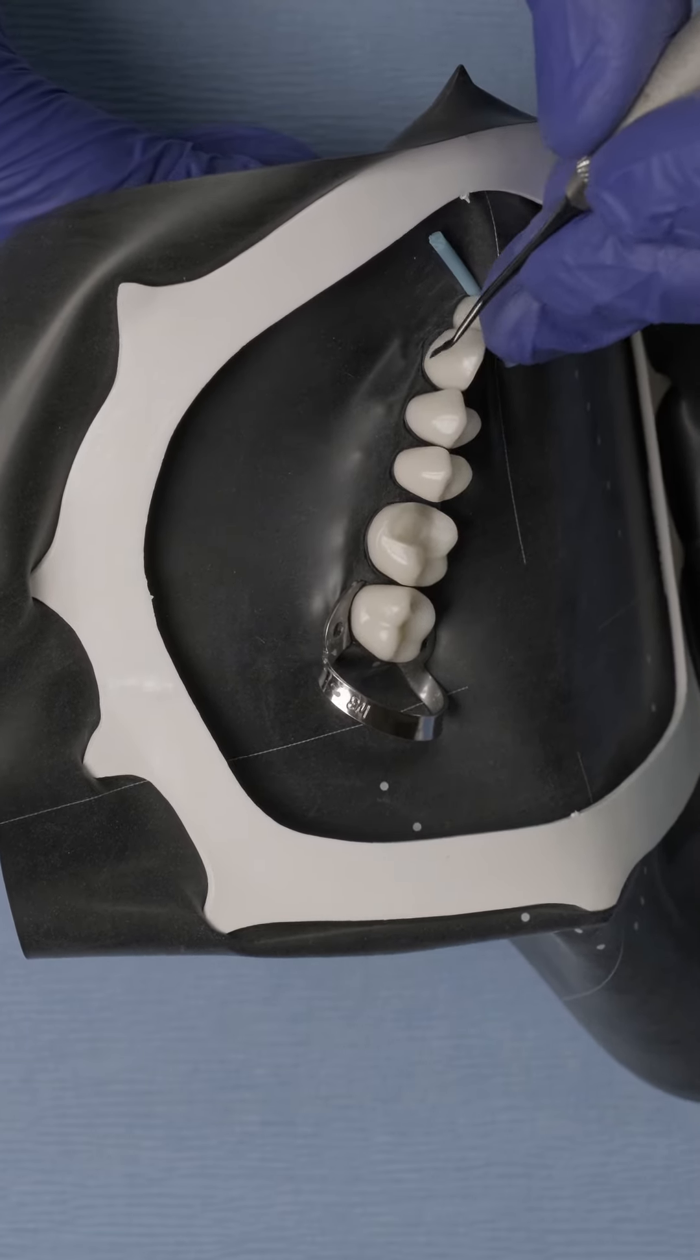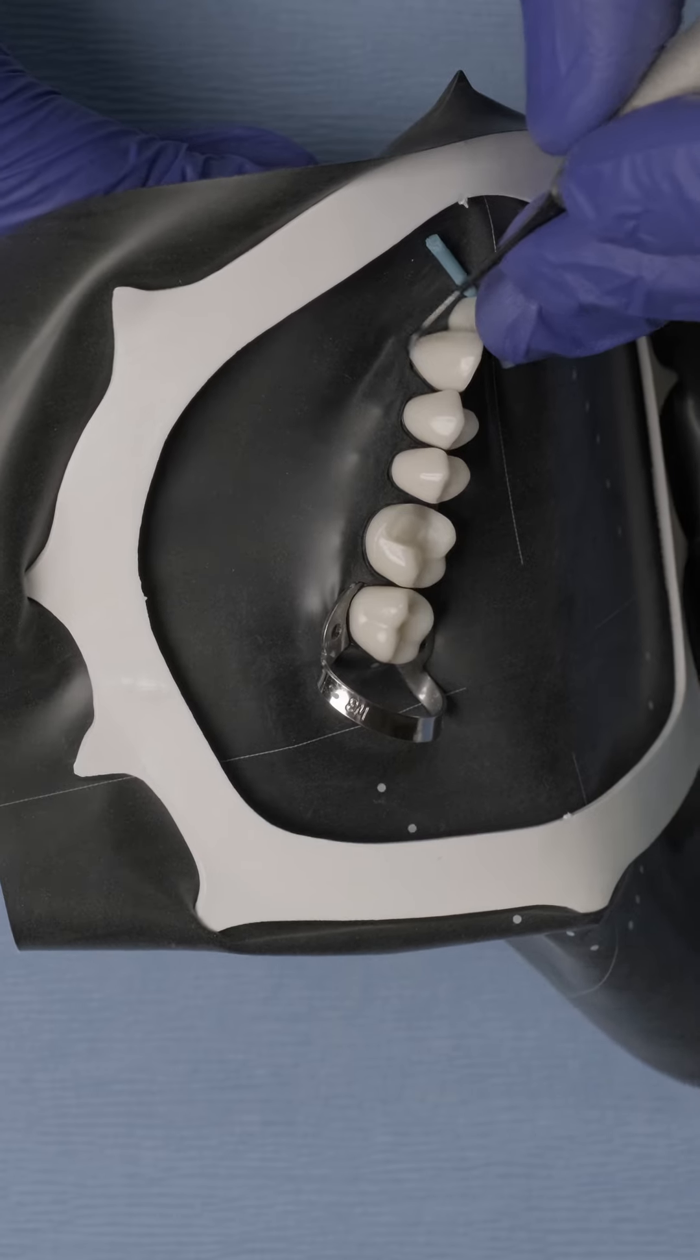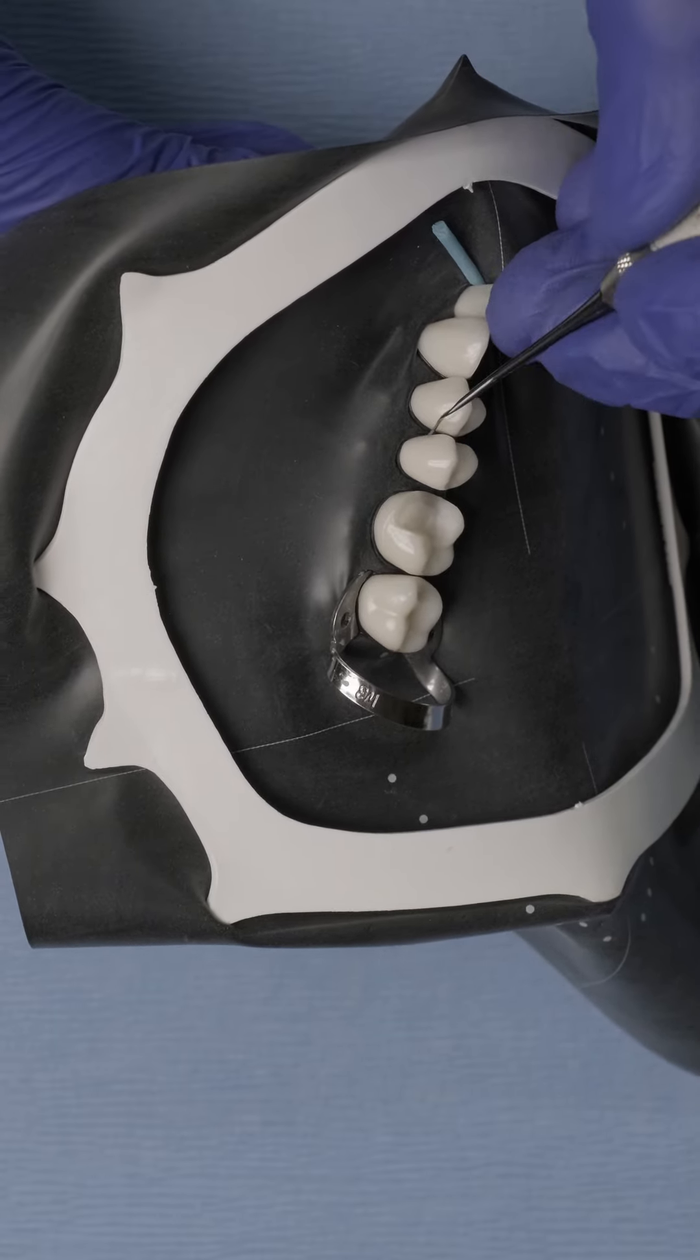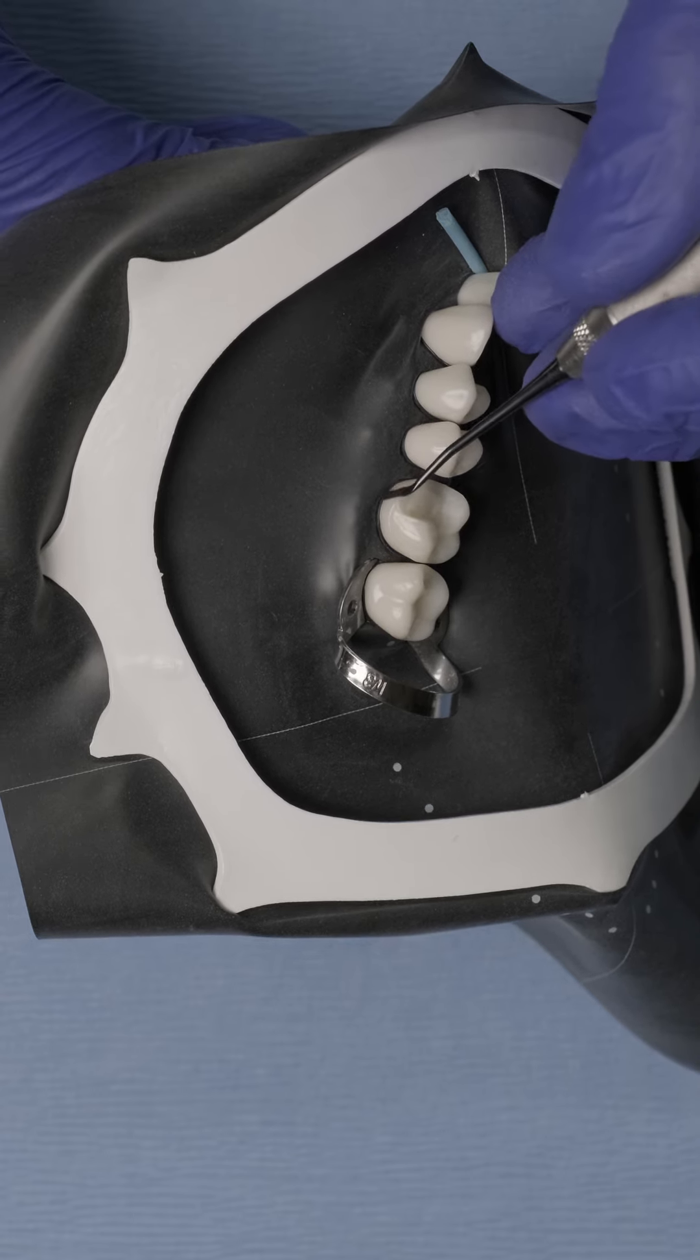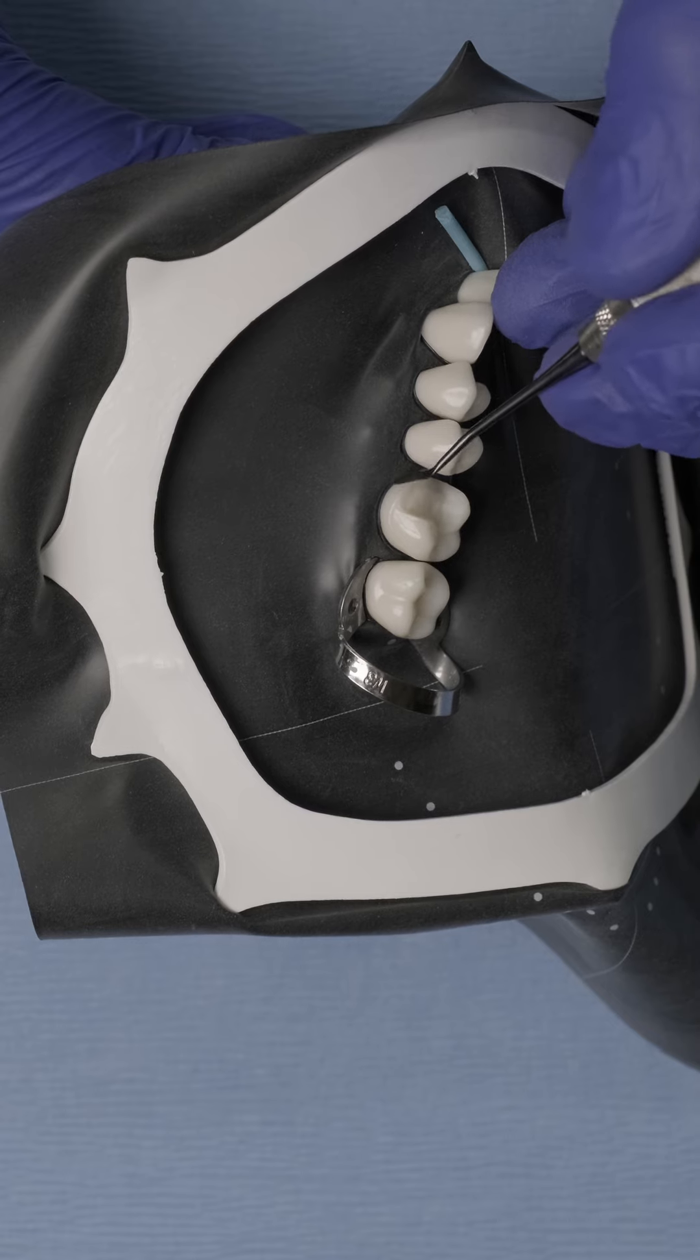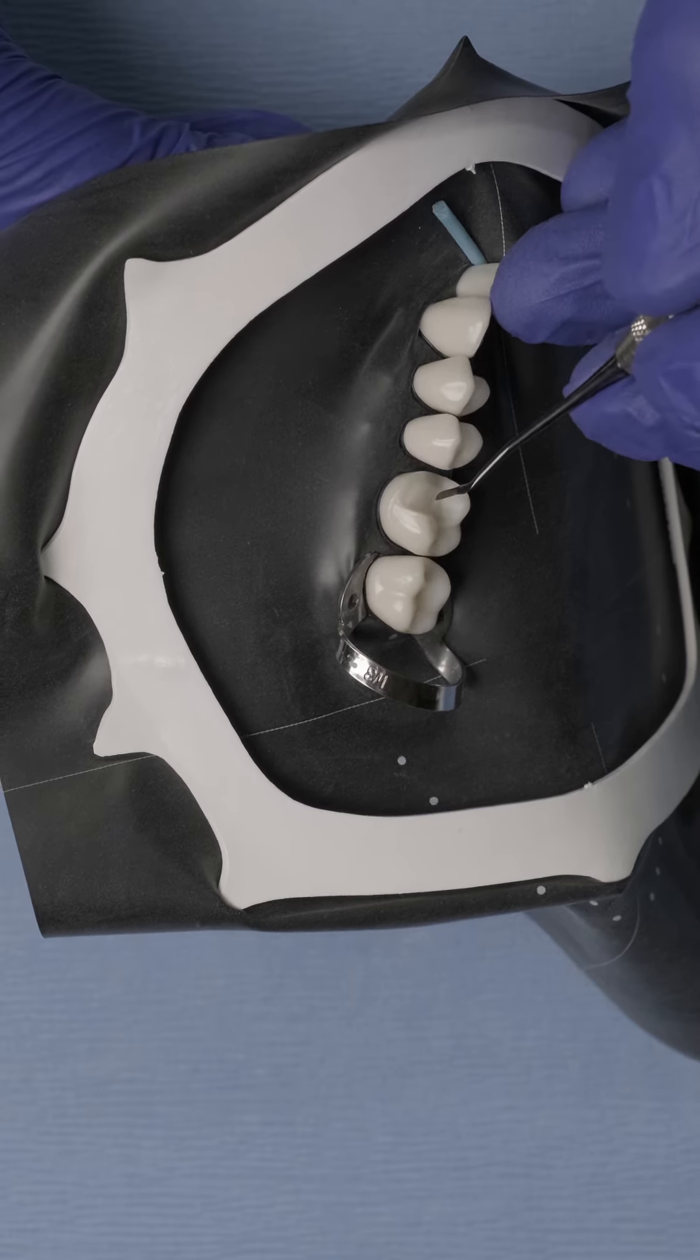As we all know, this step is crucial because once we get the rubber dam to invert into the gingival sulcus, we're going to prevent any crevicular fluid or blood in that sulcus from contaminating our operative field.